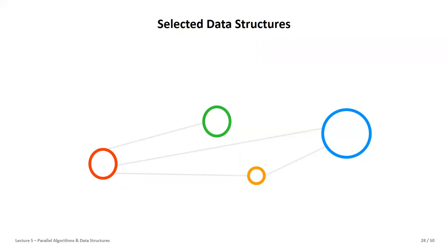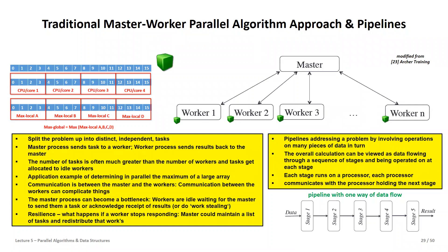I will also connect theory we covered earlier, such as Gustafson's law, load imbalance, and communication overhead. We'll also discuss how to combine many small messages into so-called MPI derived data types. It's a very data-oriented lecture, but many approaches have their roots in traditional methods.